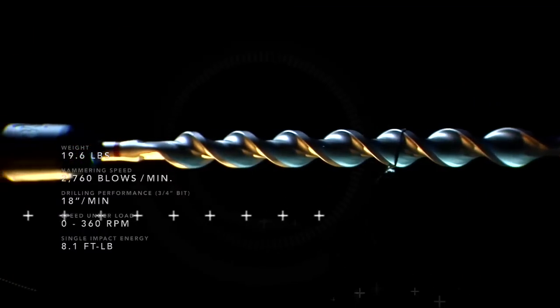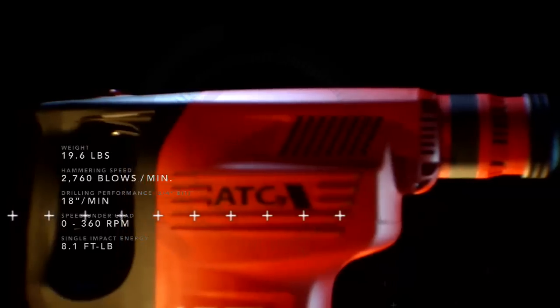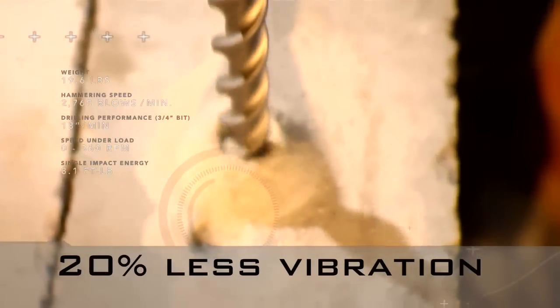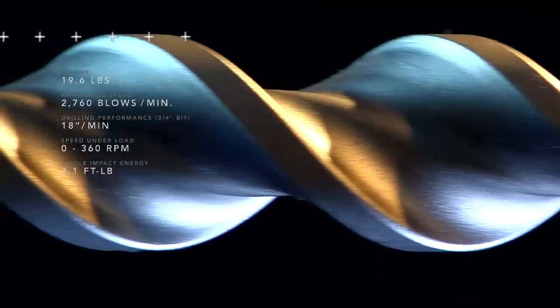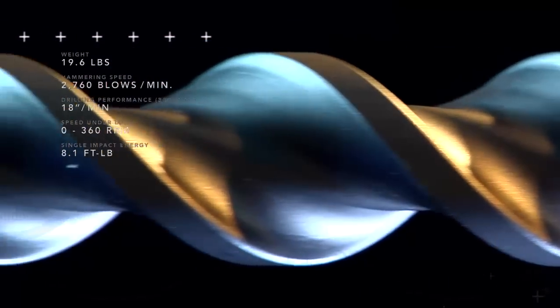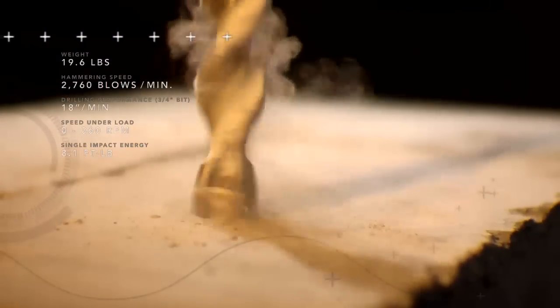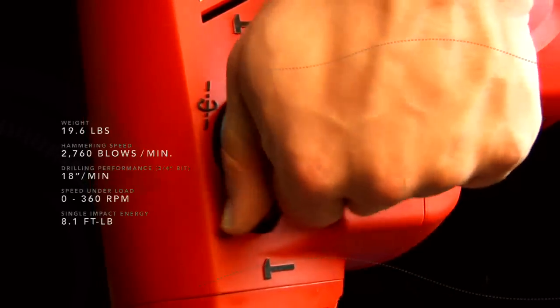Engineered for better handling, the TE70ATC operates with 20% less contact pressure and vibration compared to our last model. And our exclusive Active Torque Control System automatically disengages the motor before your drill bit jams on rebar and swings out of control. So you can actually increase productivity while reducing operator stress and fatigue.